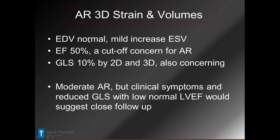In 3D strain and volumes for AR: the EDV could be normal with maybe a mild increase in end systolic volume (changing EF), and we want to look for EF less than 50% — always a cutoff for people with significant moderate or greater AR who are clinically symptomatic. The clinical symptoms were not that bad, so they'll probably just follow this fellow up.